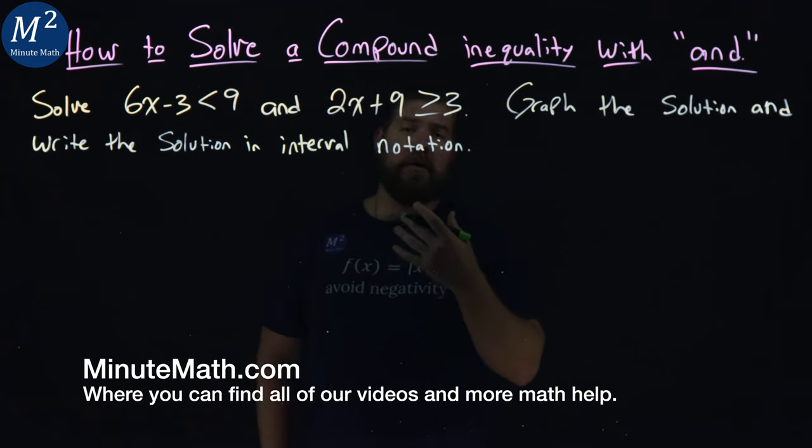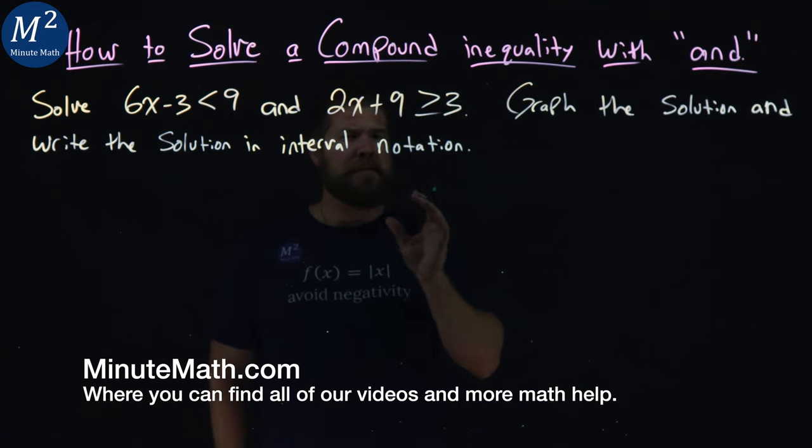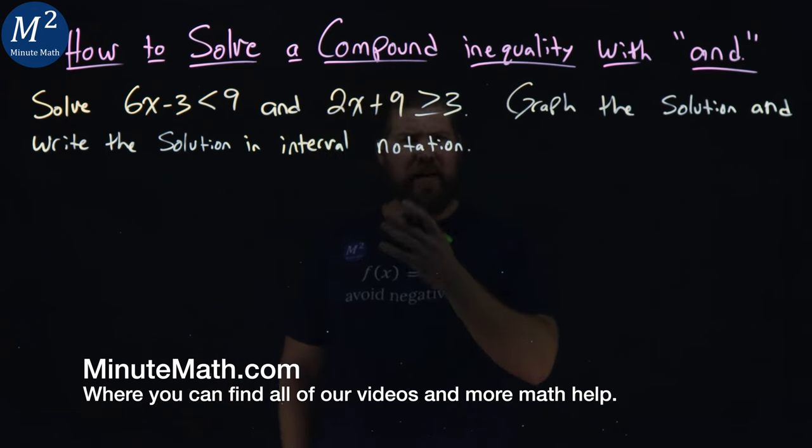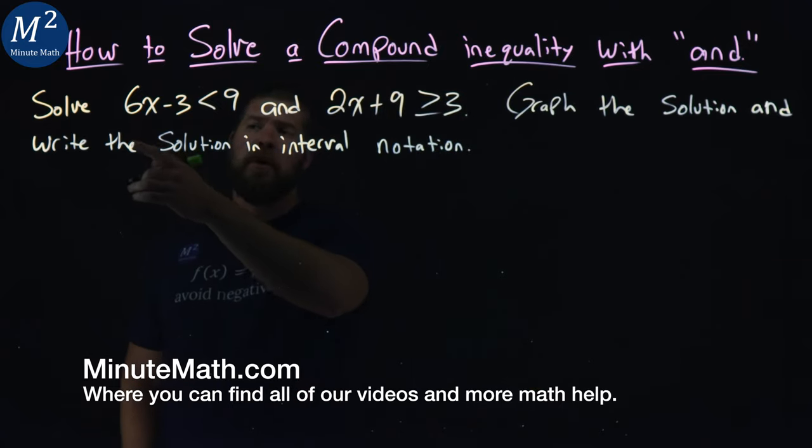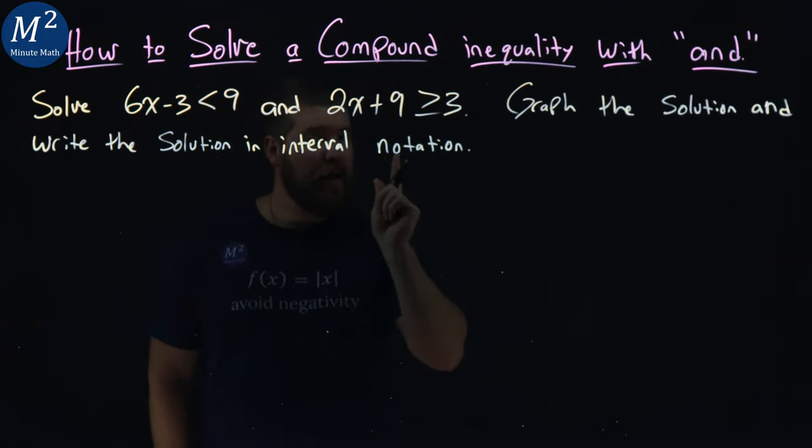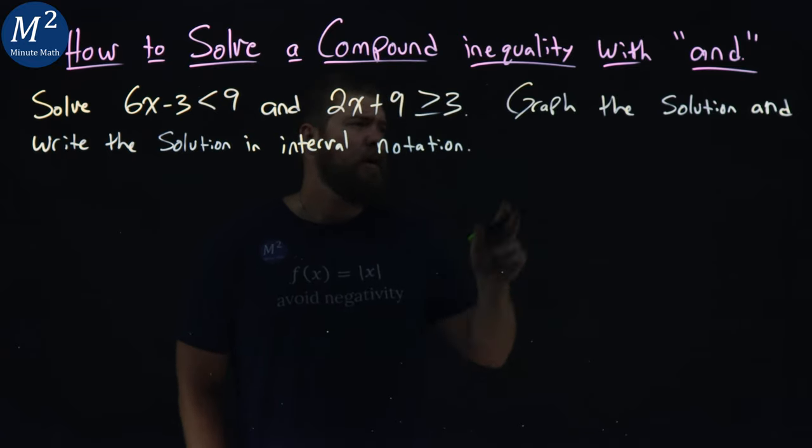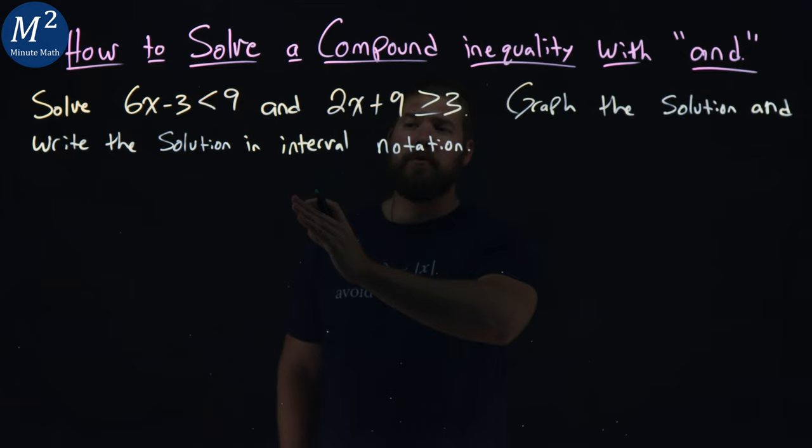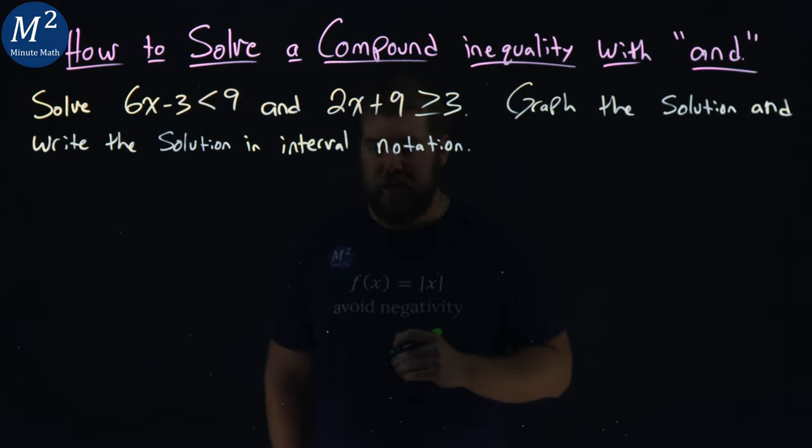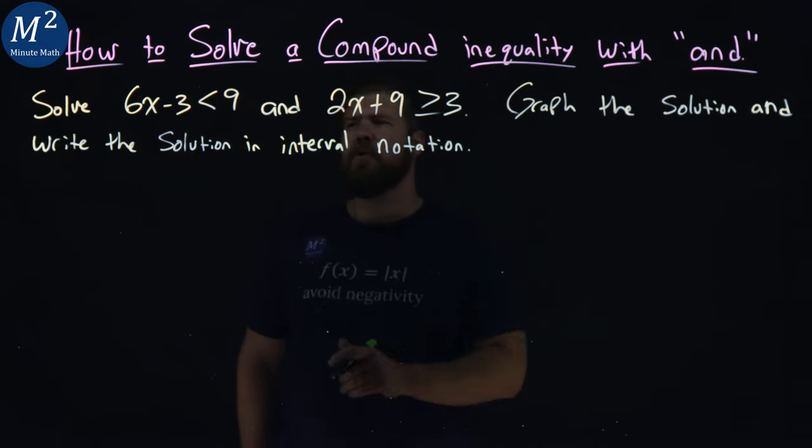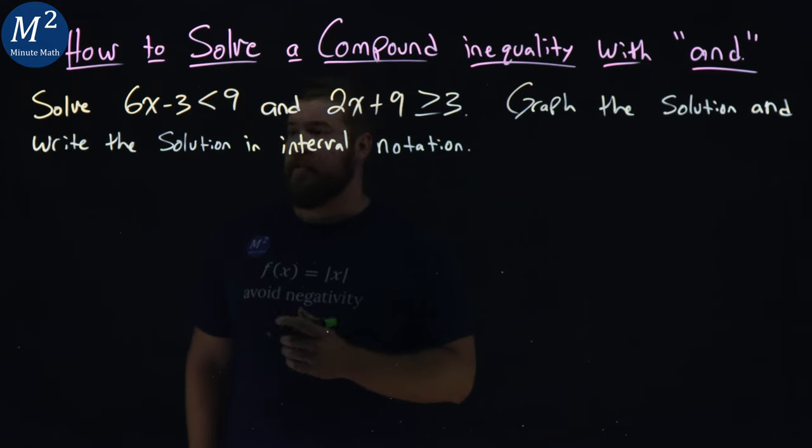Now you've seen inequalities before, but this is a little different. We have two here. We're given this problem: solve 6x minus 3 is less than 9, and 2x plus 9 is greater than or equal to 3. We're going to graph the solution and write the solution in interval notation.